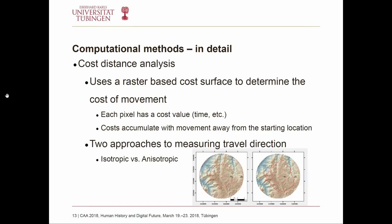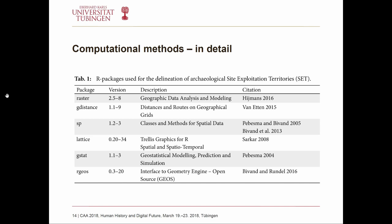For the cost distance analysis: each pixel has a cost value calculated by the hiking function, and cost is accumulated with movement away from the starting position. At the end you will not have the circular shapes mentioned earlier, but rather more structured shapes for the site exploitation territory — taking into account the DEM and the possibility of crossing a certain landscape. This changes from an isotropic to an anisotropic approach in discussing site exploitation territories.